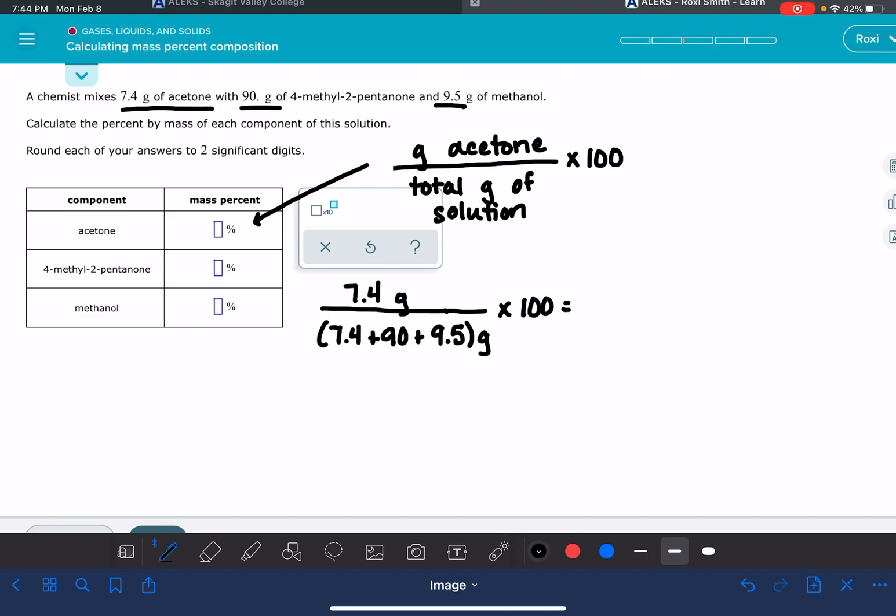We're going to get 7.4 divided by 7.4 plus 90 plus 9.5, multiply it by 100. We get 6.9 percent. ALEX says two significant digits.